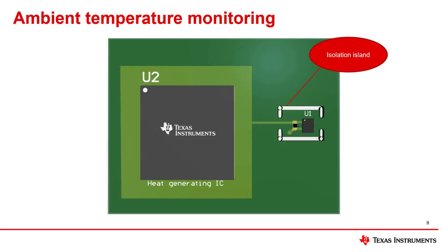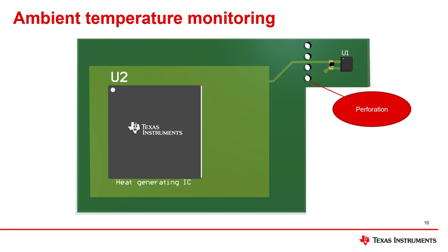When designing a system for ambient temperature monitoring, it is important to keep the sensor isolated from other heat sources. With a surface mounted device, it can be difficult to isolate from heat producing components on the same board. It is important to avoid creating solid ground planes between the sensor and other ICs, as this will cause unintentional heat transfer. One layout method is creating an isolation island around the temperature sensor to minimize heat transfer from other components. Thermal response will be maximized when the island has a smaller thermal mass, and in this case the island only contains the temperature sensor and bypass capacitor. An alternate method is separating the temperature sensor from the rest of the board with perforations.